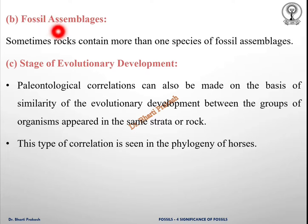Then come fossil assemblages. Sometimes the rocks contain more than one species of fossil assemblages. Under such situations, the stratographer first decides the type of organisms involved in those assemblages which lived during the time when the rock was deposited. He also determines the relative abundance of each of the species. Then based on this information, he accurately correlates two or more geologic sections by comparing the fossil assemblages in each section.